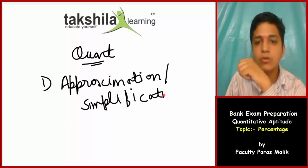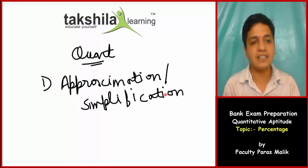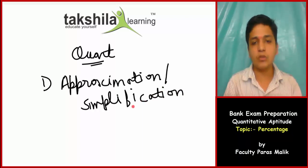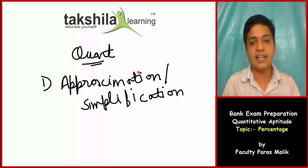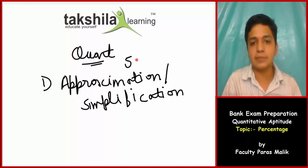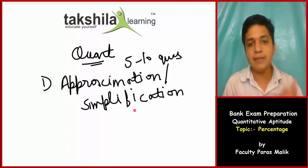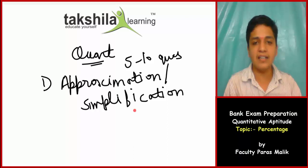This first topic is approximation and simplification. If you look at it, you can expect 5 questions from approximation, 5 from simplification, or a total of 5 to 10 questions. This topic is very important because getting 5 to 10 questions from a single topic is quite significant.